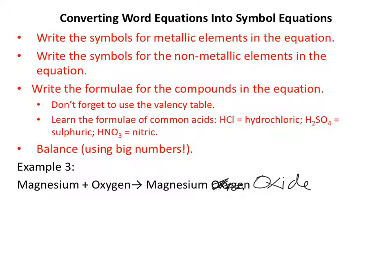Let's go through this in order. Write the symbols for the metallic elements in the equation. Well, the only metallic element appearing as an element is magnesium, so that will be Mg. The next step is write the symbols for the non-metallic elements in the equation. Oxygen is the only non-metallic element appearing as an element. Now I've written O2. Have a look back at whether oxygen appears in that magic 7 on your periodic table. And it does. So oxygen is a diatomic element.